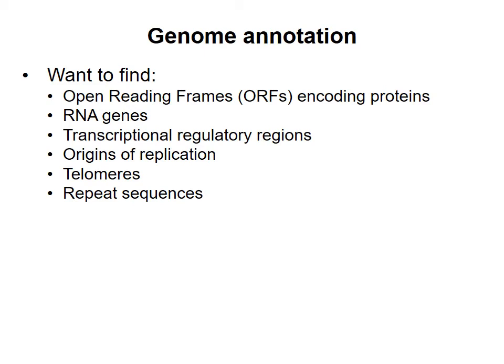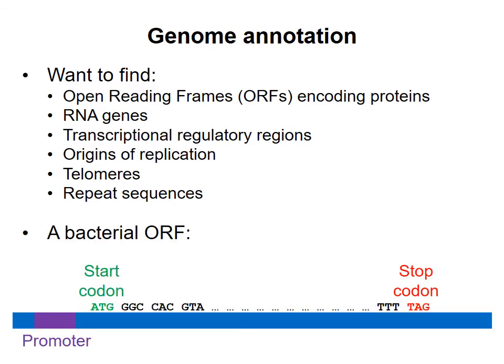The main types of sequences we'd like to find in the genome include open reading frames that encode proteins, genes encoding functional RNA like transfer RNA or ribosomal RNA, sequences that regulate transcription, replication origins, telomeres if the chromosomes are linear, and repeated sequences. For this course, I want to focus on ways we can identify bacterial open reading frames, or regions that code for an expressed protein.